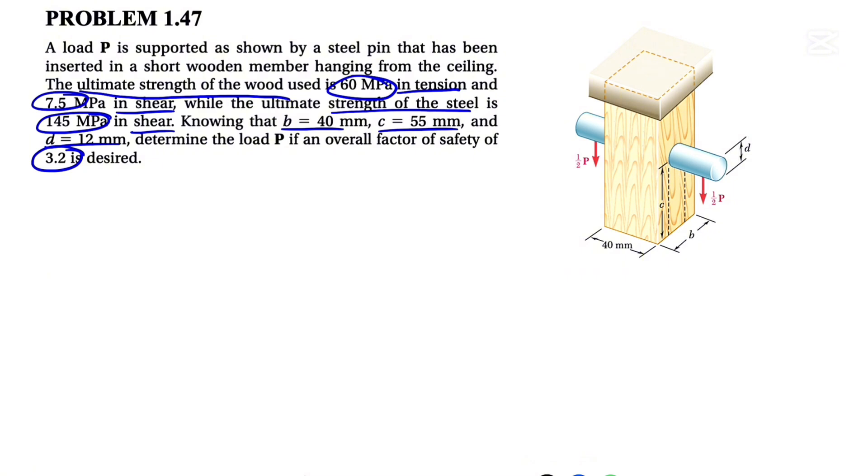So we are dealing with three different things: two shear stresses and one tension. We can find the ultimate force P based on each of these. At the end, we're going to go with the lowest, and based on that and the factor of safety we can find the allowable force P.